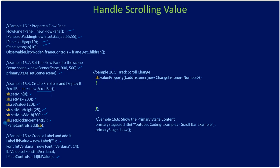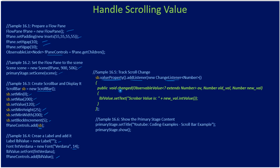Here we access the scroll bar's value property. Since it's a property, we can equip it with a listener, and here we are passing a change listener. We override the changed method and make use of the old and new value. Using our label, we report the scroll bar value as the new value parameter, reporting whatever scroll bar value change occurs.